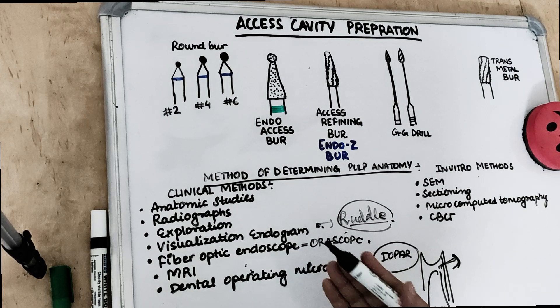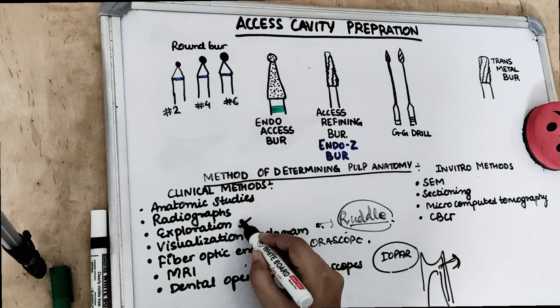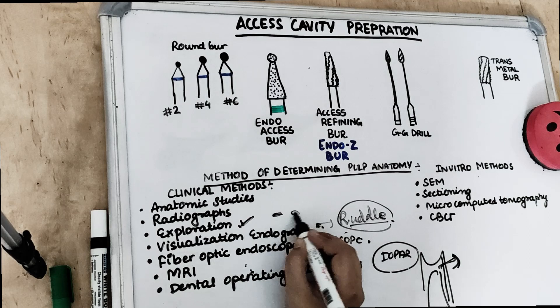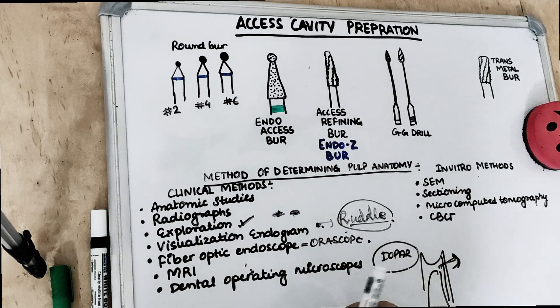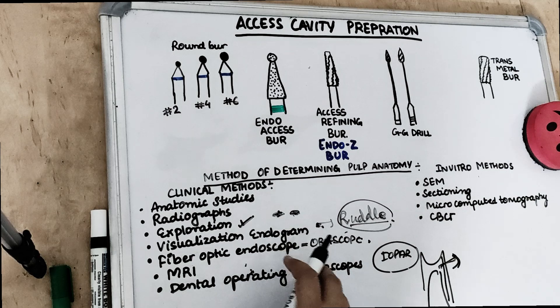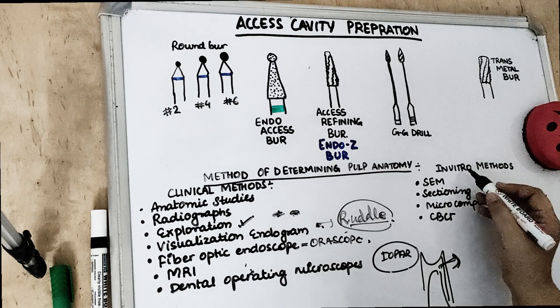MRI produces data on the computer which helps in understanding canal morphology. The exploration technique involves reaching the pulp floor, where canal orifices appear as dark-colored spots. These dark spots represent the root canal orifices. This is known as the dentinal map, in which grooves and anatomic lines are dark in color and connect the canal orifices.